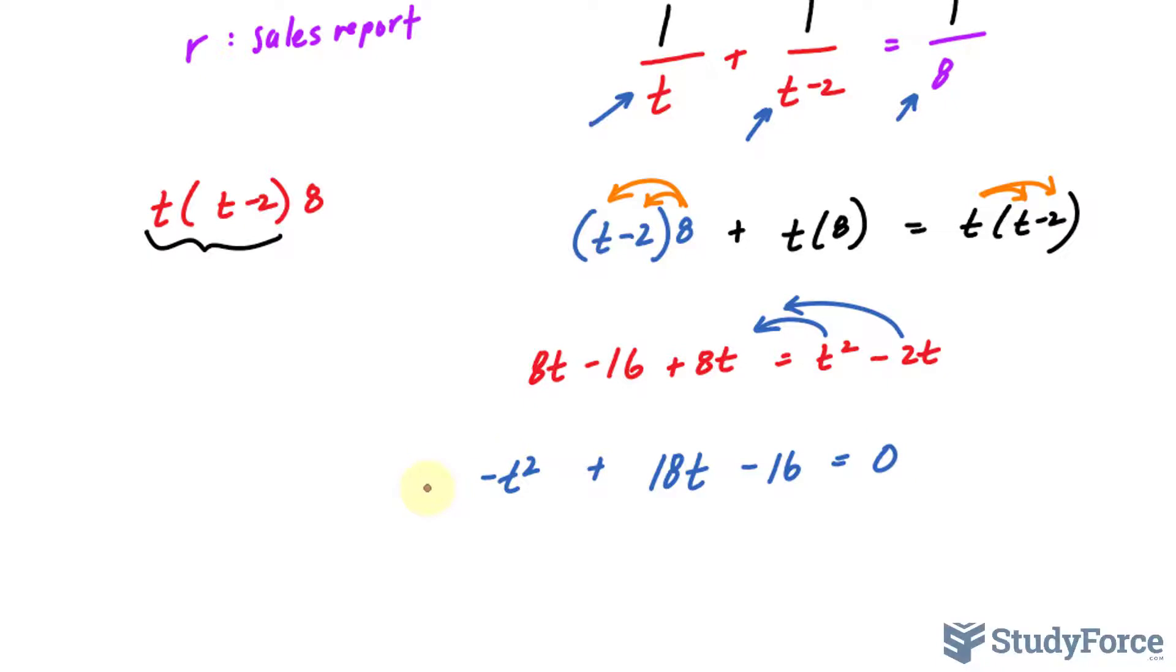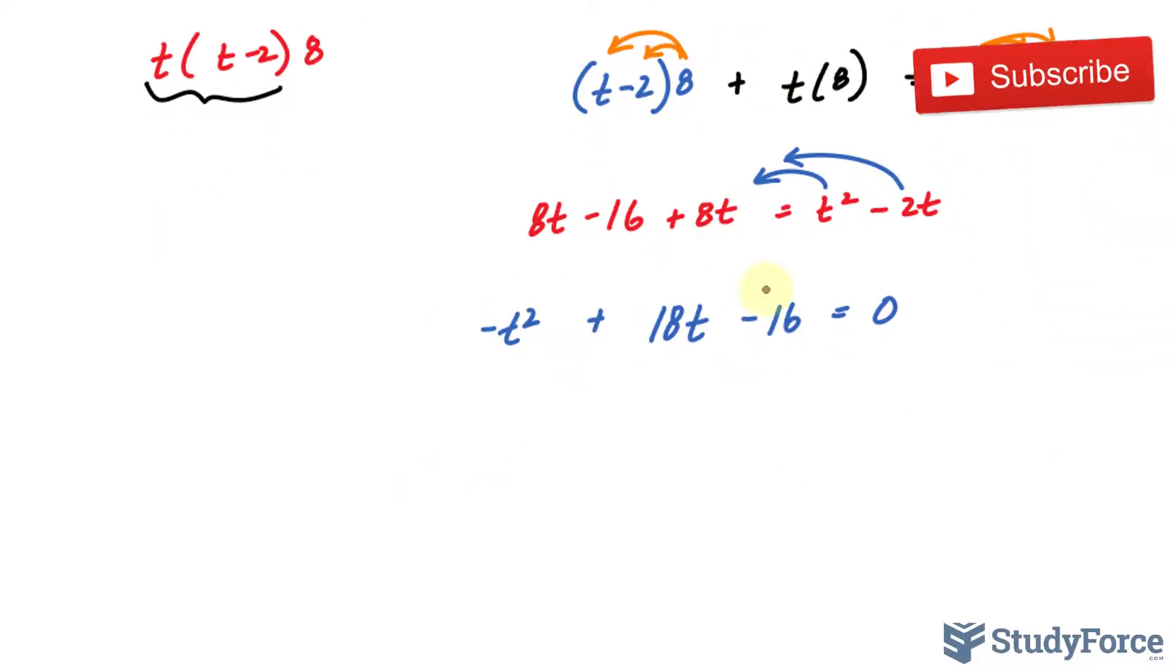Because we have a leading negative number, we can multiply everything on the left side by negative one to eliminate the negative. I'll do that just to simplify things. So t squared minus 18t plus 16 is equal to zero.